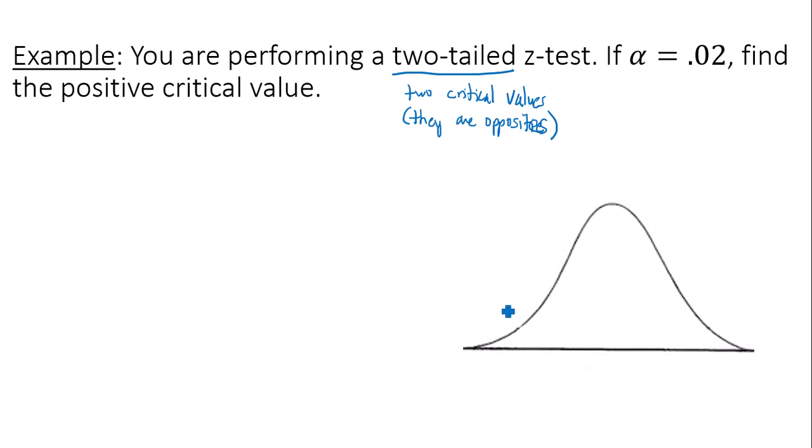Since this is a two-tailed test, let me go ahead and mark off my two tails, and I'll have some negative critical value and some positive critical value. The positive is the one that I want in this case.